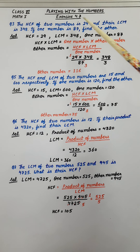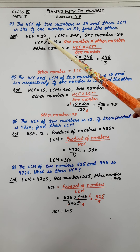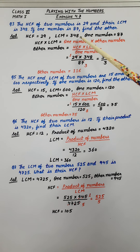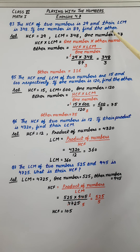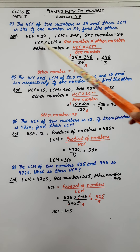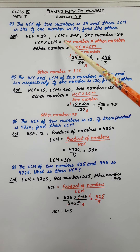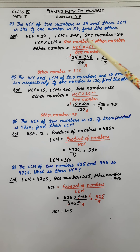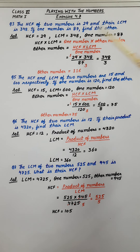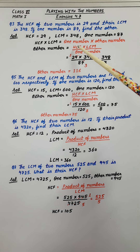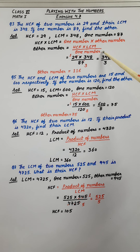It's given in the question that HCF of 2 numbers is 29, LCM is 348, one number is 87, and we have to find the other number. We know this formula: HCF into LCM equals the product of 2 numbers — that means one number multiplied by the other. We have to calculate the other number, so the formula will be HCF into LCM divided by one number.